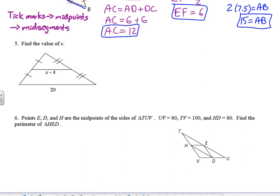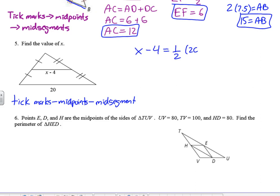Number five puts our algebra skills to the test: find the value of x. Tick marks tell us we have midpoints, and connecting midpoints gives a mid-segment equal to half the third side. So x minus 4 equals one half of 20, which is 10. Adding 4, x equals 14.